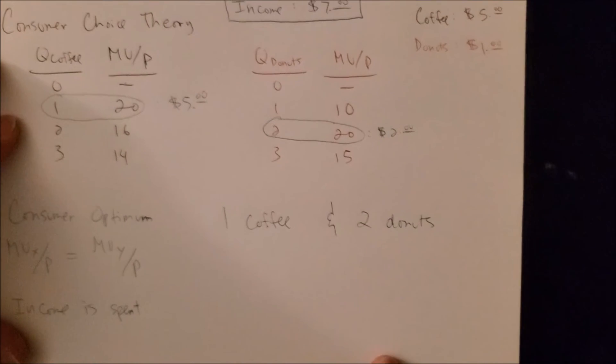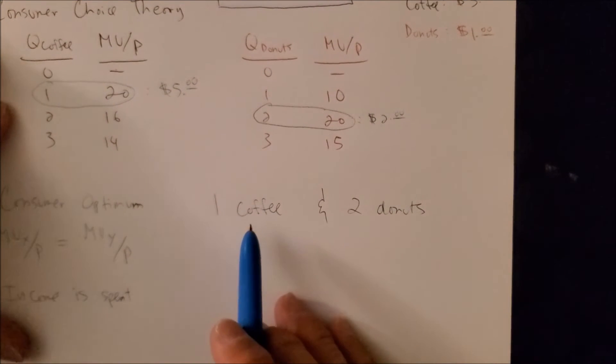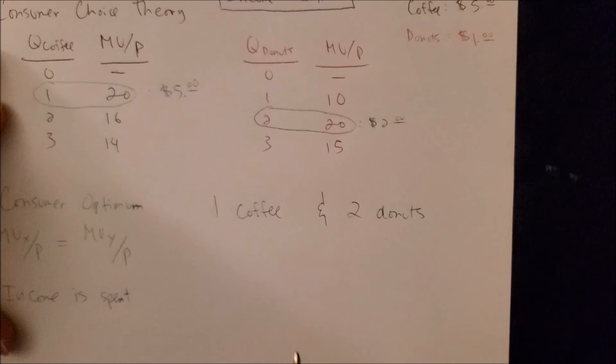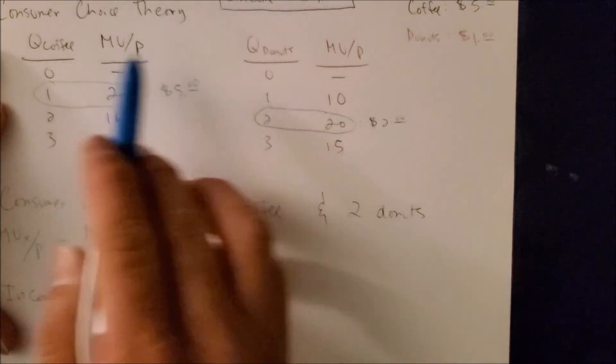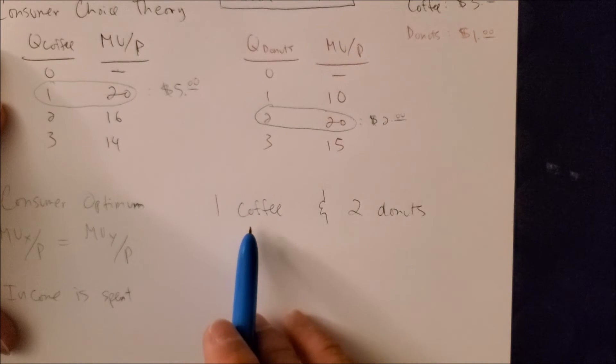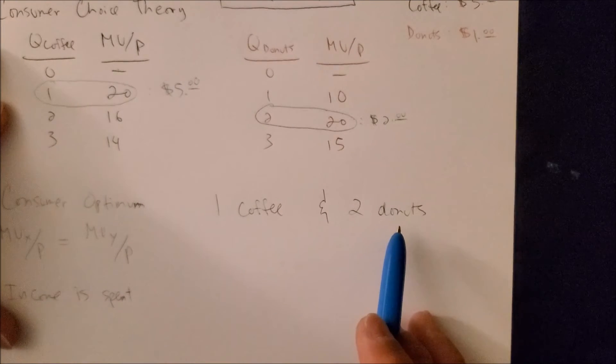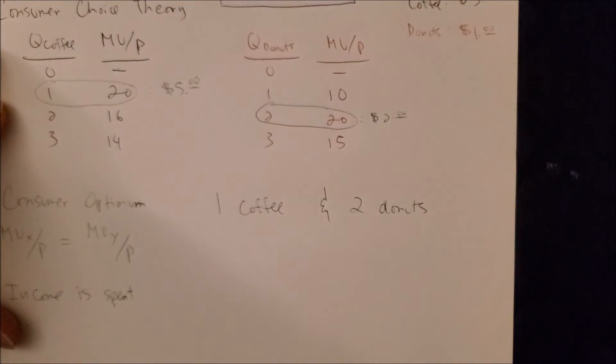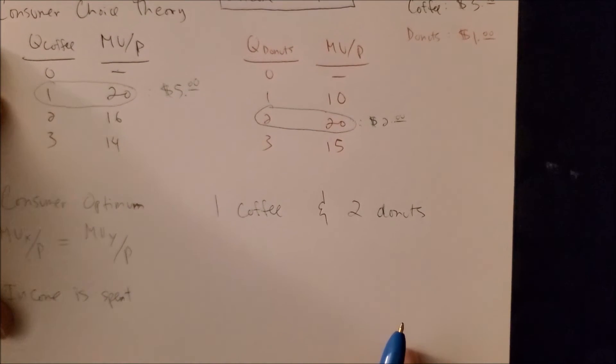If you think about this, it does make sense that for most consumers they see coffee and donuts as complementary goods. Having one coffee and two donuts would actually make a lot of sense—it would sound really appealing and appetizing for anybody, especially in the early morning.